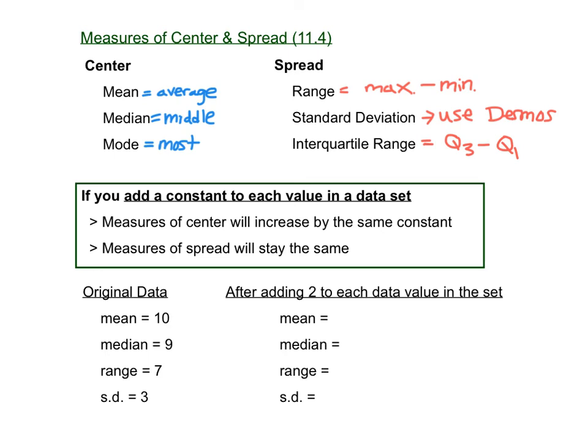If you add a constant to each data value in a dataset, the measures of center are going to increase by that same constant. So the mean, median, and mode would all go up by the same value that you add to each of the individual data values. The measures of spread, though, are going to stay the same. So the range, standard deviation, and interquartile range would not change if we added a constant to each of the values in a dataset.